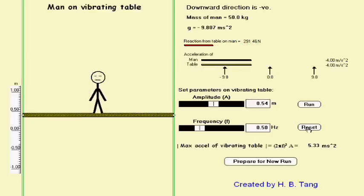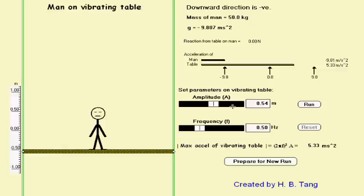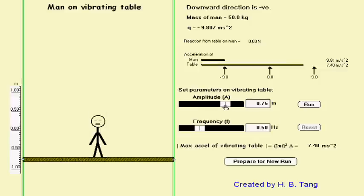Let's reset it and increase the amplitude to 0.75 meters. Increase the frequency to 0.72 hertz so that the maximum acceleration of the table is 15.35 meters per second squared. And see what will happen to the man.